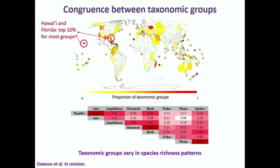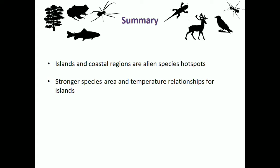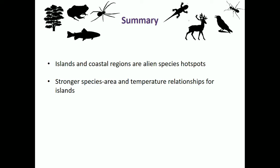To sum up: islands and coastal regions tend to be alien species hotspots. There tends to be a stronger species-area and temperature relationship for islands compared to mainlands — possibly because islands are smaller, simpler systems, making those signals more apparent than in larger, more complex mainland regions.